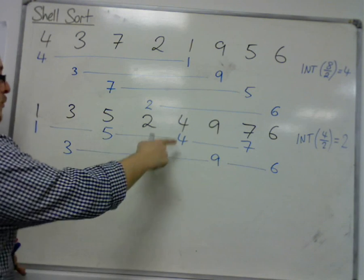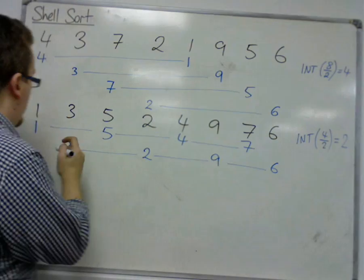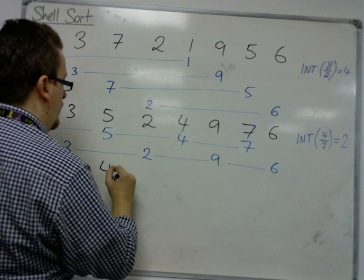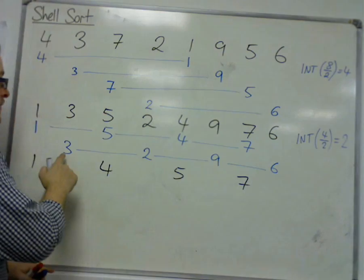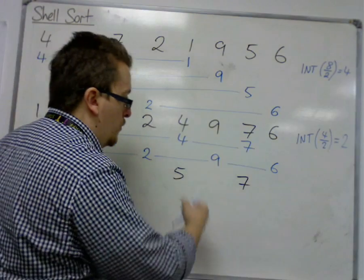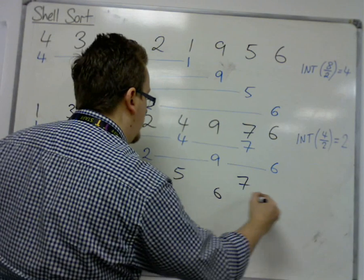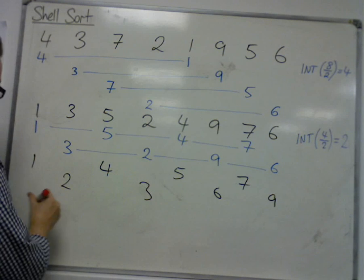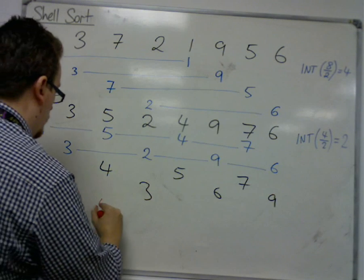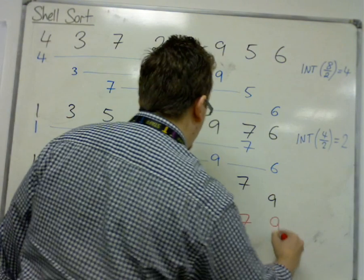So the 1, 5, 4, and 7 have gone through a shuttle sort, and we have arrived at 1, 4, 5, 7, and 3, 2, 9, 6 go through a shuttle sort, and we arrive at 2, 3, 6, 9. And so these two lists of numbers, they filter down into 1, 2, 4, 3, 5, 6, 7, 9.